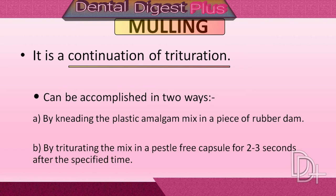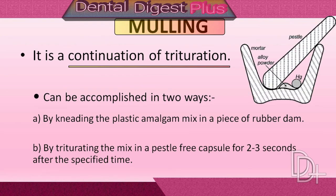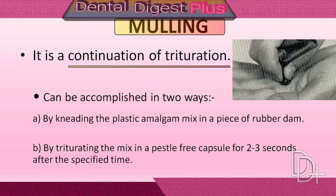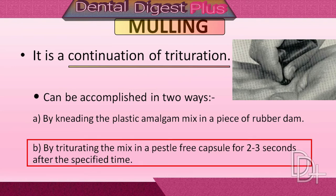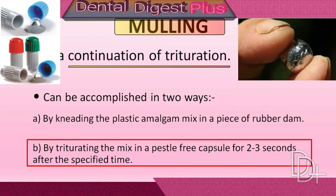Due to the continuous folding of the dental amalgam mass from the side of the mortar to the center, a layered mass is developed, which is made more coherent by hand mulling. It can be accomplished in two ways: by kneading the plastic amalgam mix in a piece of rubber dam, or by triturating the mix in a pestle-free capsule for two to three seconds after the specified time.